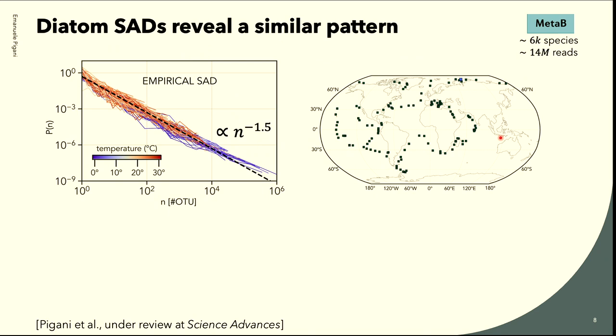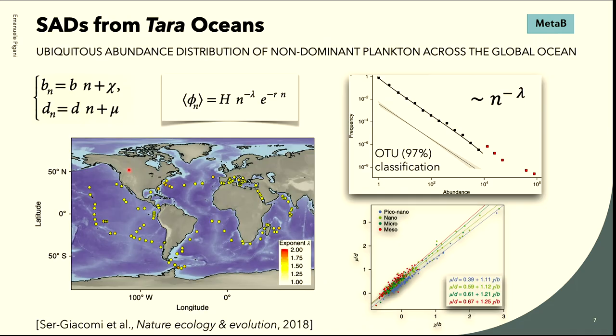We started by testing if, focusing only on diatoms, we observe similar patterns. The answer is yes. In this plot I represent the species-abundance distribution of all the communities collected by Tara, with a power law reference with the same exponent that Sergiacomi found. We can clearly observe that there are differences depending on different temperatures, with the most abundant stations being the coldest or polar ones. But despite the diversity in total abundance, the power law is more or less the same all across the dataset.